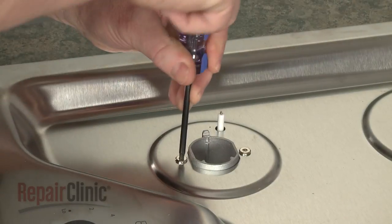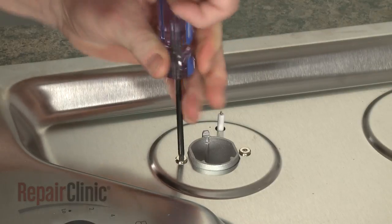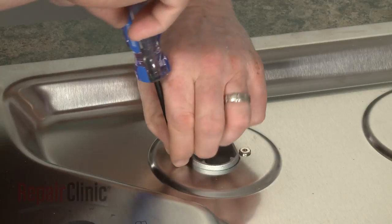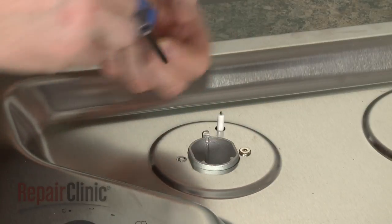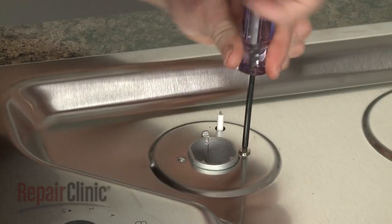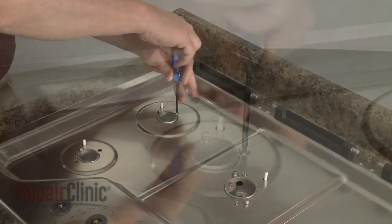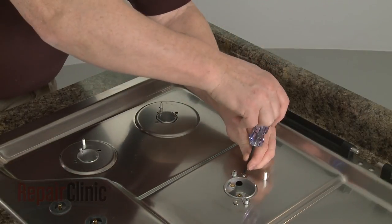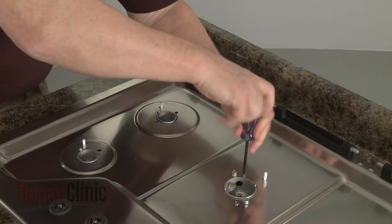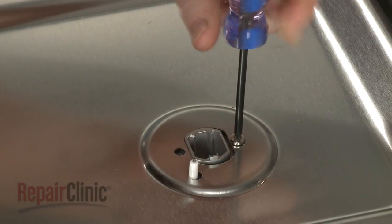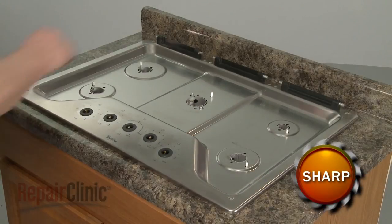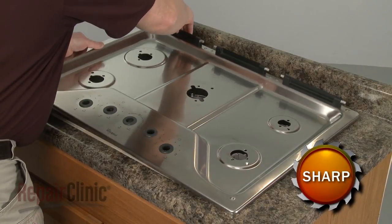Now use a T20 Torx bit to unthread all of the screws securing the orifice holders to the main top. With the screws unthreaded, you can lift off the top.